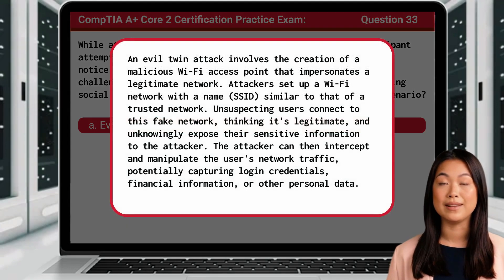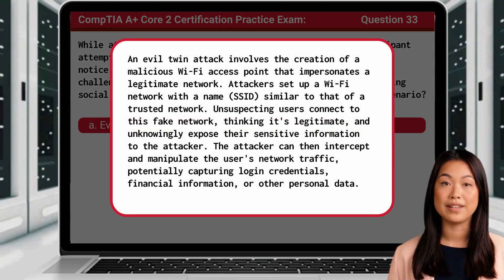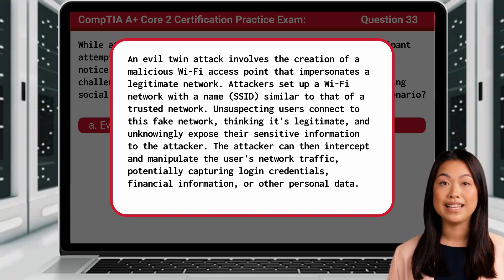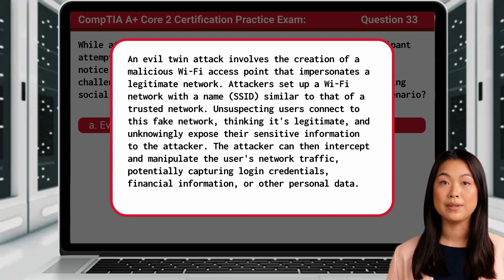An evil twin attack involves the creation of a malicious Wi-Fi access point that impersonates a legitimate network. Attackers set up a Wi-Fi network with a name similar to that of a trusted network. Unsuspecting users connect to this fake network, thinking it's legitimate, and unknowingly expose their sensitive information to the attacker. The attacker can then intercept and manipulate the user's network traffic, potentially capturing login credentials, financial information, or other personal data.